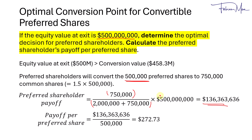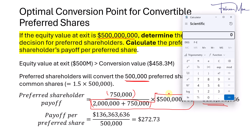Another way to verify: taking $500 million divided by 2.75 million shares gives a post-dilution share price of $181.82. Multiplying by the conversion ratio of 1.5 gives $272.73 per preferred share — the same result as computed previously.